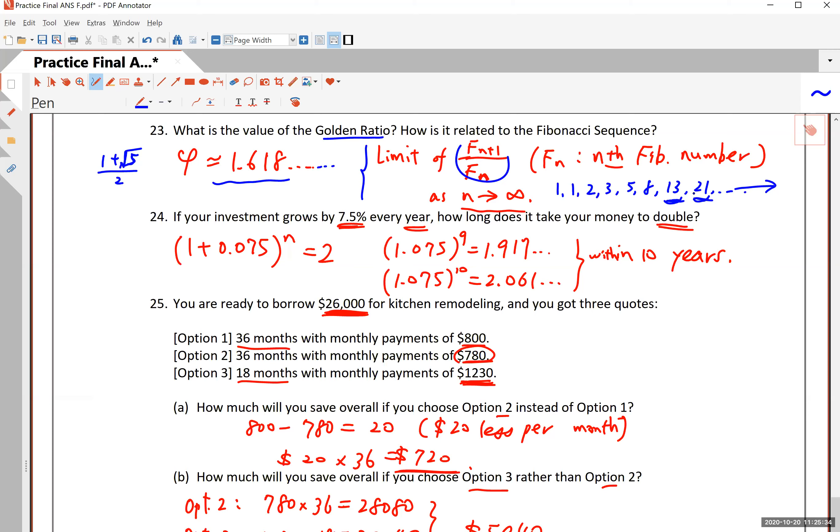So 21 over 13 is approximately 1.6. And then the next number will be 34. But if you divide 34 by 21, that number gets closer and closer to the real golden ratio.